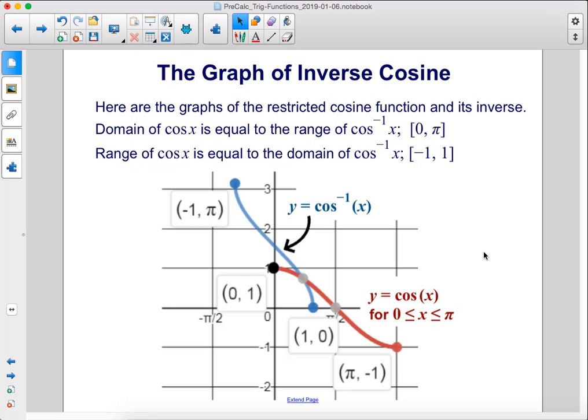Here are the graphs of the restricted cosine function and its inverse. Domain of cosine x is equal to the range of arc cosine x, 0 to π. Range of cosine x is equal to the domain of arc cosine x, negative 1 to 1.